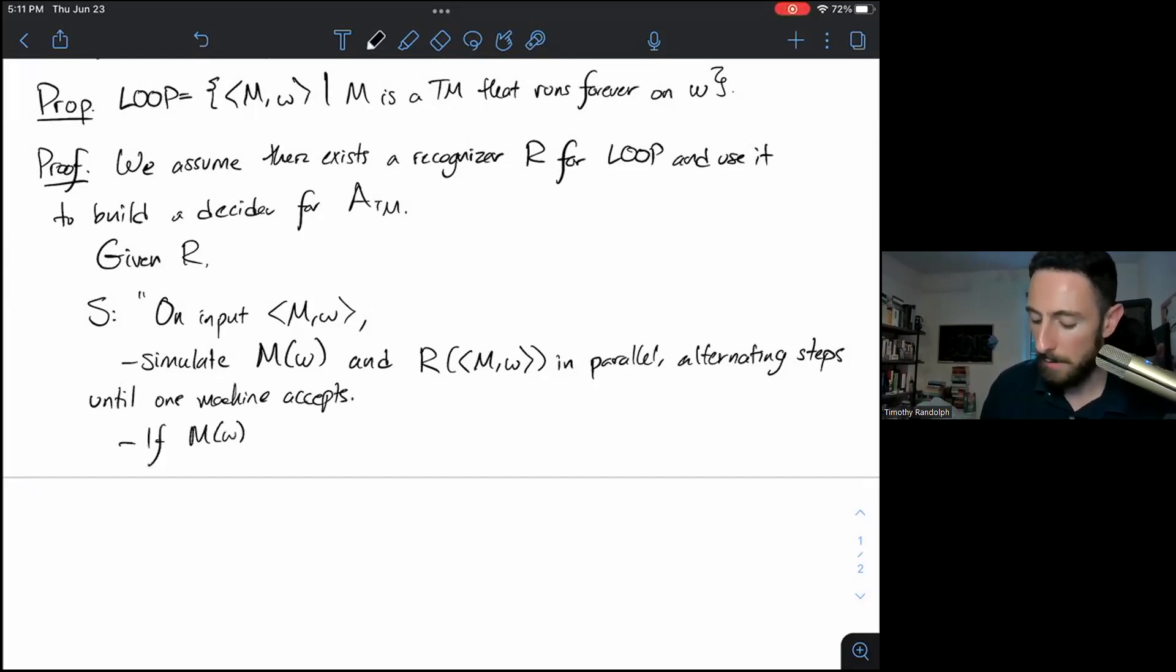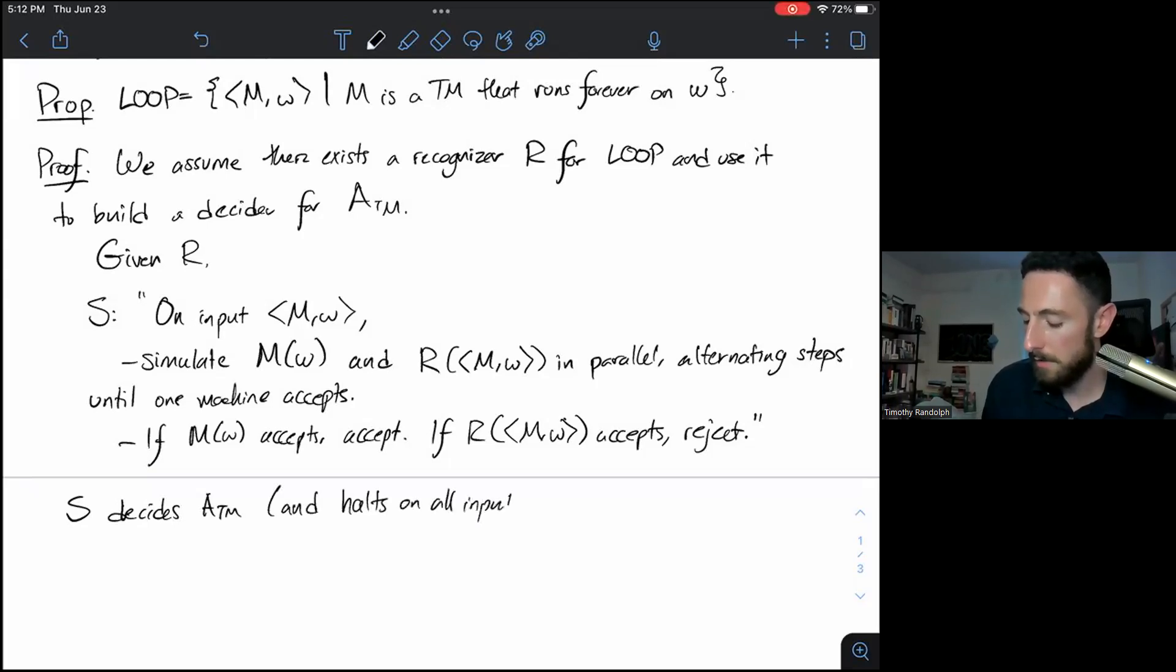If M(W) accepts, accept. If R(M,W) accepts, we reject. So I claim this is a decider for ATM. So S decides ATM and halts on all input. This is a requirement for a decider. All deciders must halt on all input. The reason I'm writing it out is because it may not be totally obvious this machine always halts. Here's the argument why.